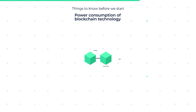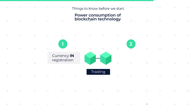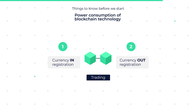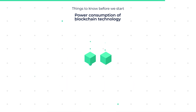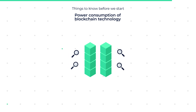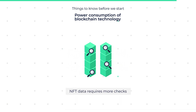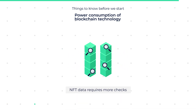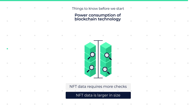Regular blockchain usage, such as trading cryptocurrencies, requires simply two actions: currency in-registration and currency out-registration. In the case of NFTs, multiple blockchain data blocks are added, which in comparison with regular usage requires more checks, simply because all of the NFT data is larger in size than regular transaction data.